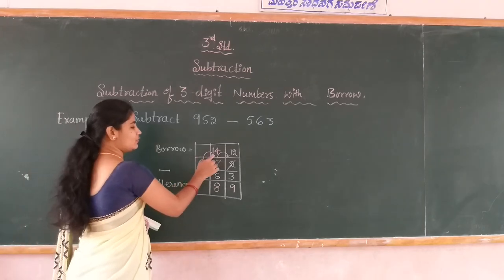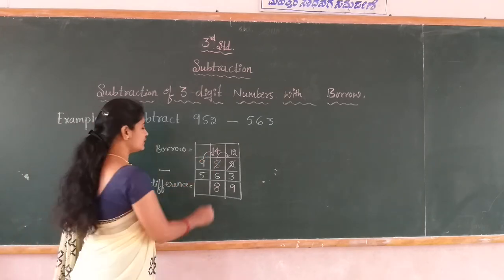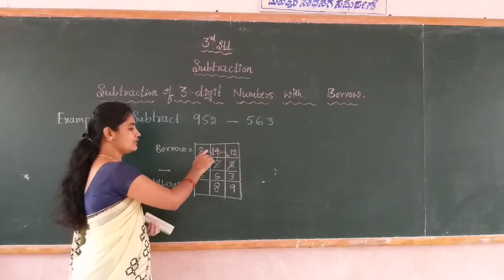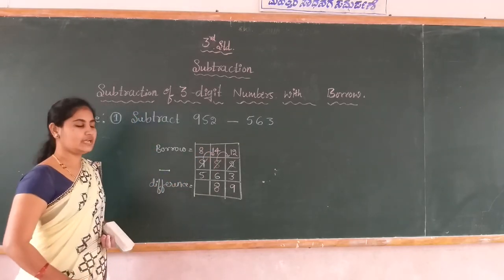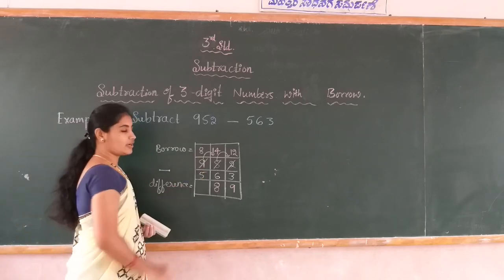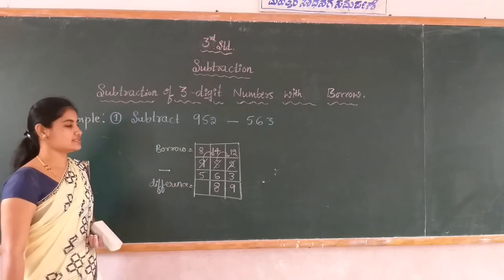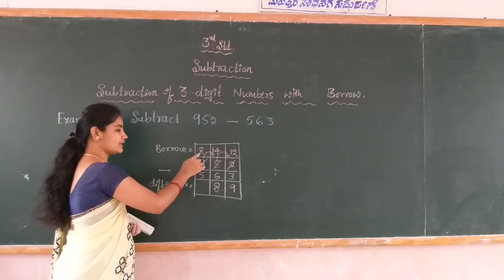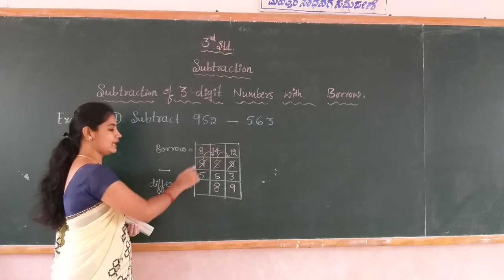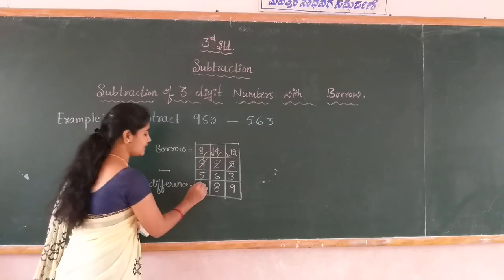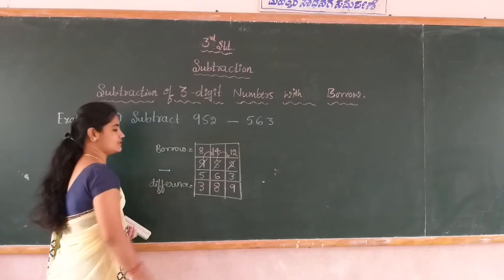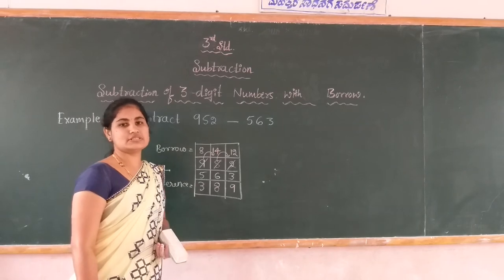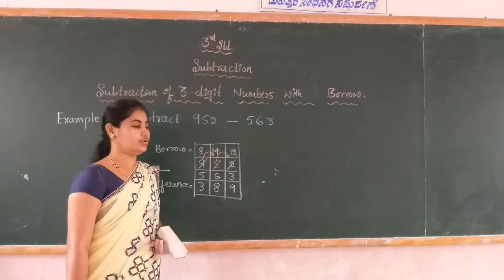9 gave 1 borrow to the 4, so 9 becomes 8. 8 minus 5 is possible — 8 is bigger than 5. 8 minus 5 is 3. Dear students, this is the subtraction of three digit numbers with borrow.